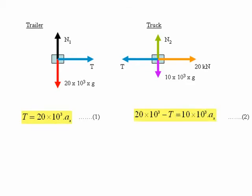Similarly, if we look at the truck, the resultant force on the truck in the horizontal direction is the force of the engine, the 20 kN force minus the tension in the tow bar, again putting that into Newton's second law equation. That is equal to the mass of the truck times its acceleration Ax.